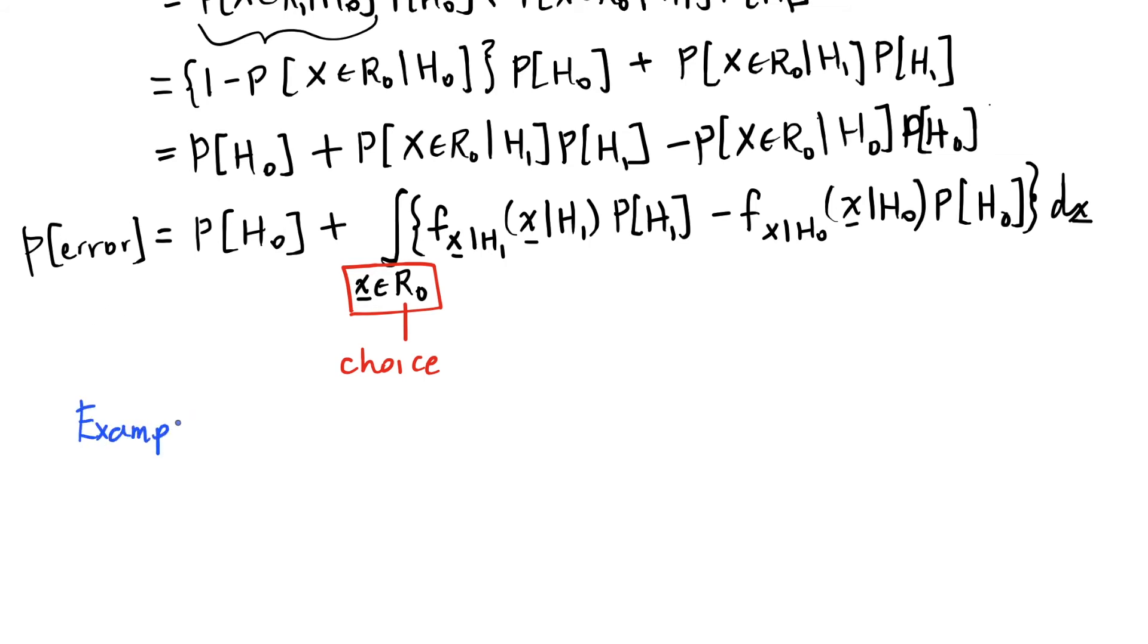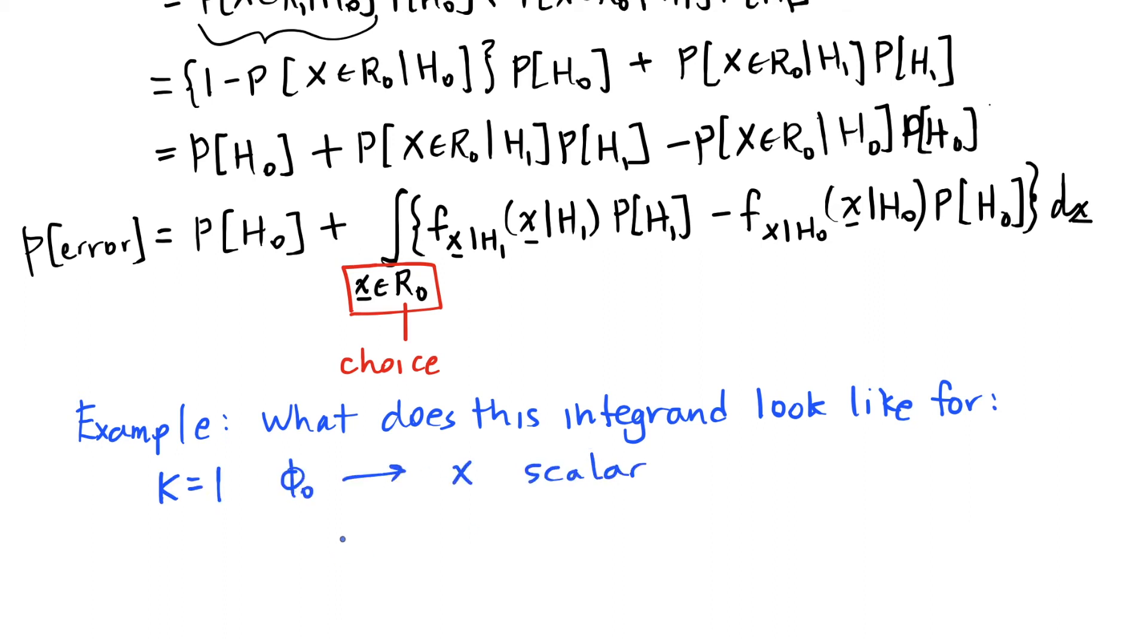How would we choose this in order to minimize the error? As a first step, I'm going to do an example. What does this integrand look like for K equals 1? That is, there's only one basis function, phi 0, and thus, X is not a vector, it is a scalar. And I'm going to talk about the case when our noise is Gaussian, additive Gaussian noise. So our value of X is either equal to A0 plus some noise, or X is equal to A1 plus noise. This would be for the H0 case, and this would be for the H1 case. And the noise, W, is Gaussian, with some variance, sigma squared and 0 mean.